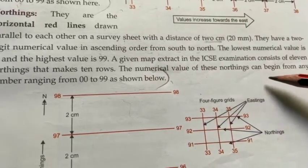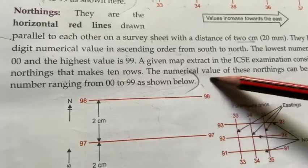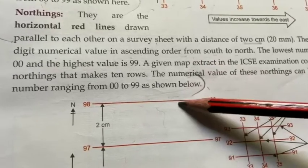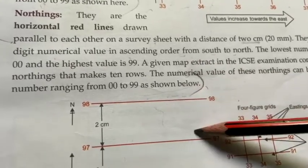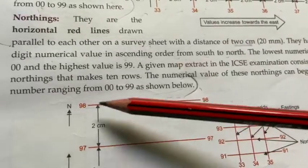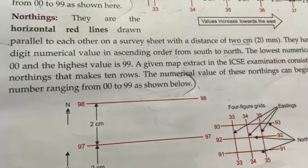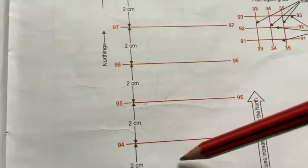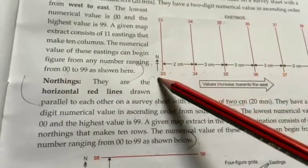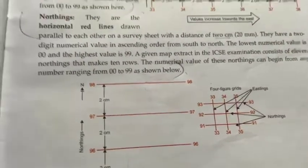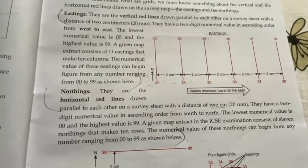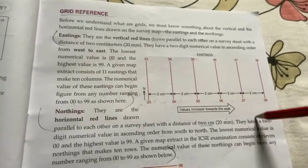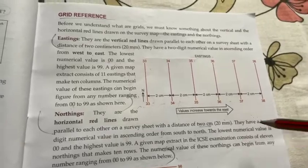The numerical value of these northings can begin from any number ranging from 0 to 99। इसमें भी वही same चीज — 0 से लेकर 99 के बीच में कोई भी number हो सकता है। फर्क इतना है कि eastings standing lines होती हैं और northings flat lines होती हैं — eastings west से east जाती हैं, northings south से north जाती हैं। Next topic में हम four-figure grid reference और six-figure grid reference निकालना सीखेंगे। तब तक इसको revise करिए। Thank you class।